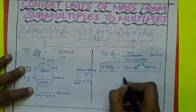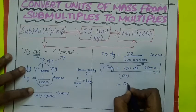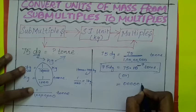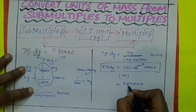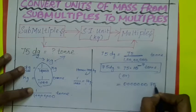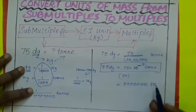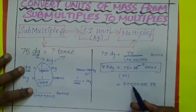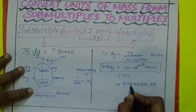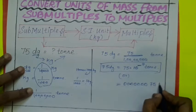To write it in decimal, how many zeros are there? 7 zeros. 1, 2, 3, 4, 5, 6, 7. And write the numerator number 75. Now place the decimal after 7 digits. 1, 2, 3, 4, 5, 6, 7. So 0.000075 ton.